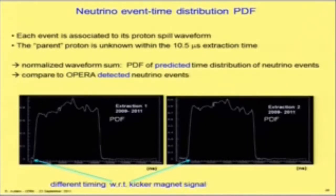This has to be done separately for the two extractions because, as I mentioned, they have a different timing. Then we can compare this kind of distribution to the neutrino events recorded by OPERA.